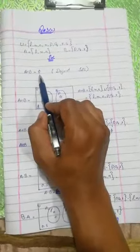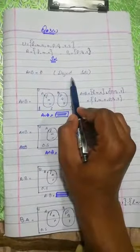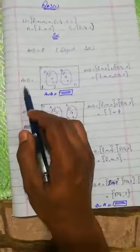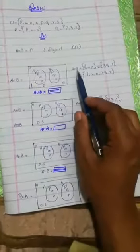Next question number 3C. We have a universal set given that is L, M, N, O, P, Q, R, S. Set A is given as L, M, N, and set B we have P, Q, R.